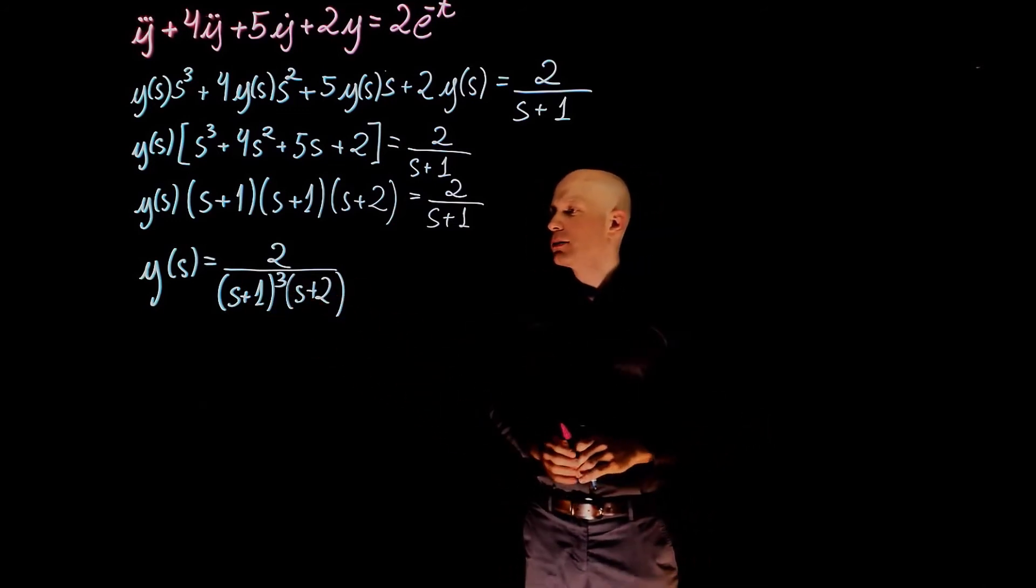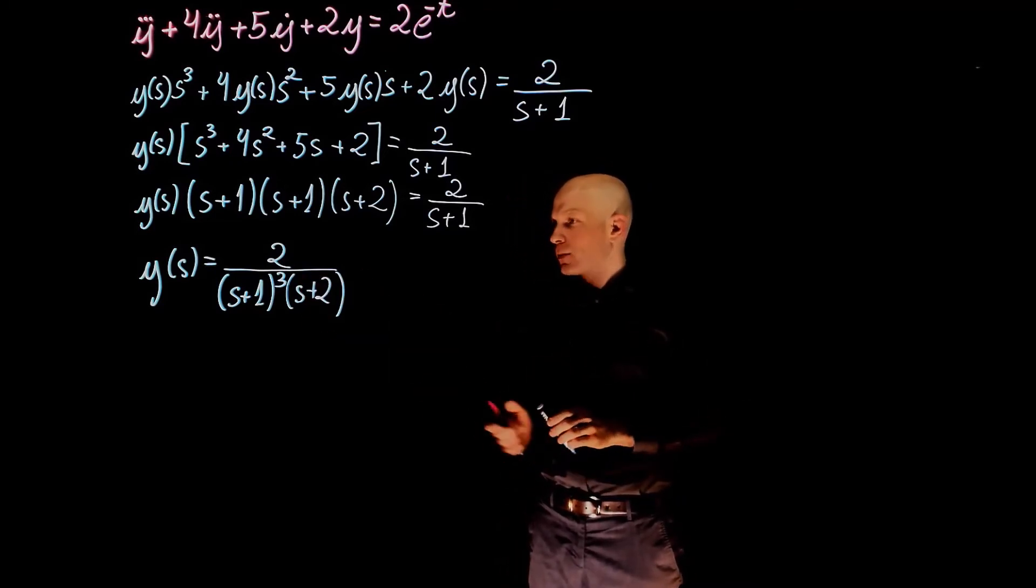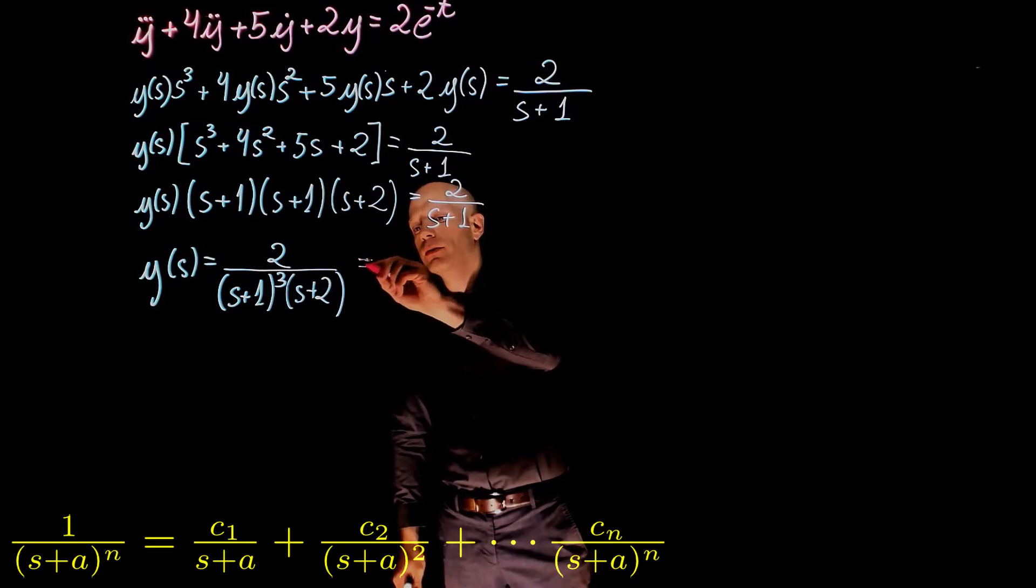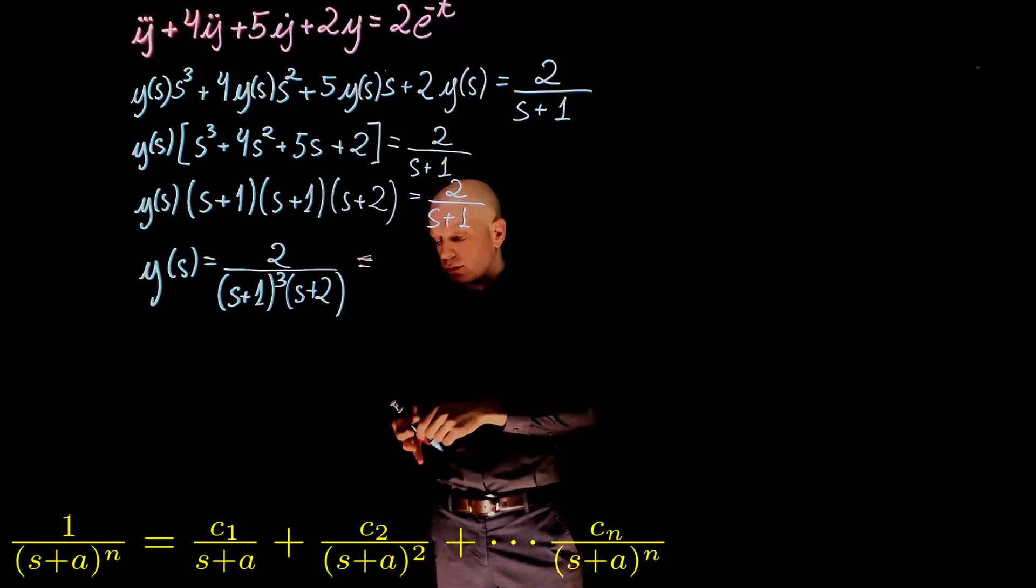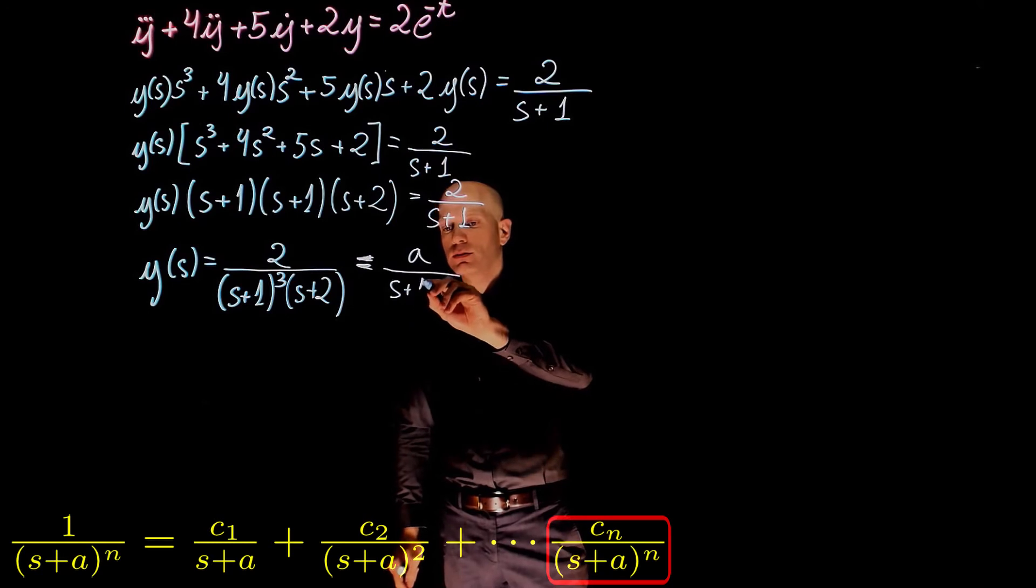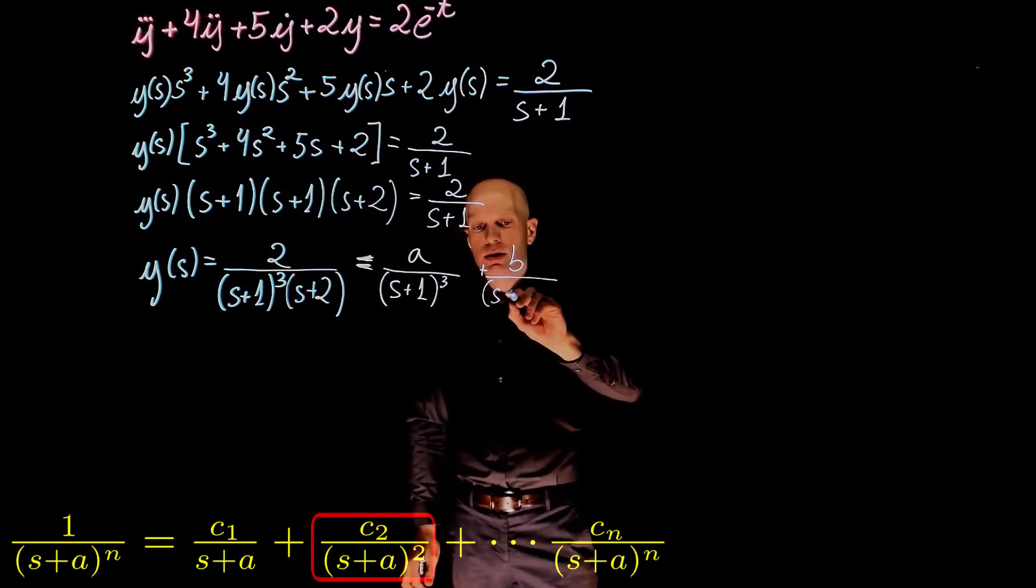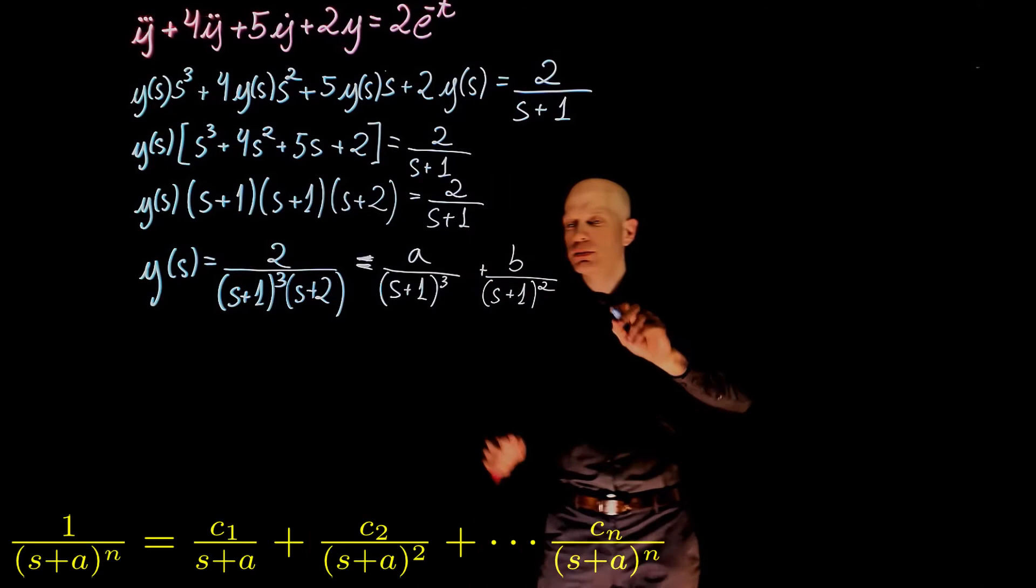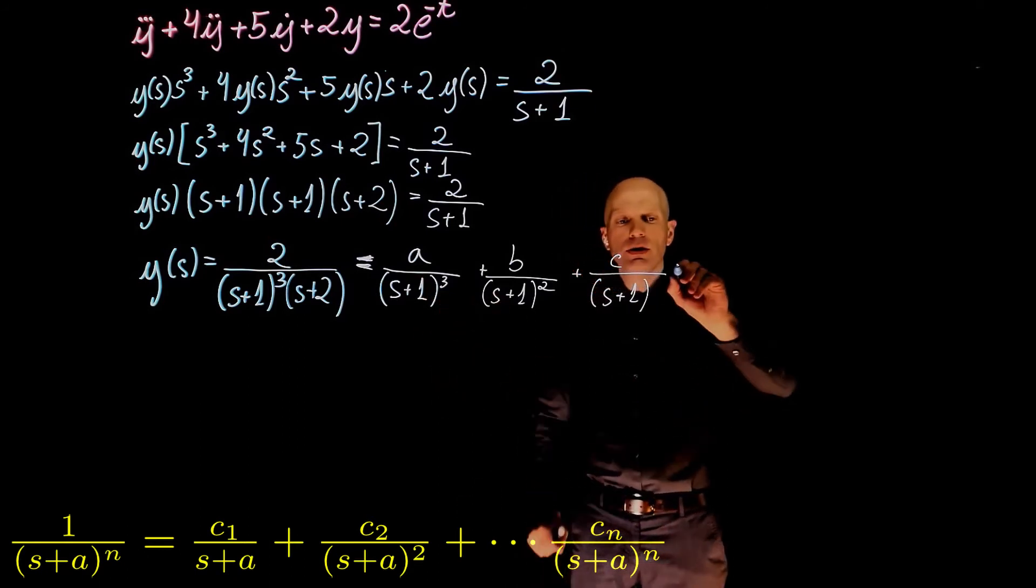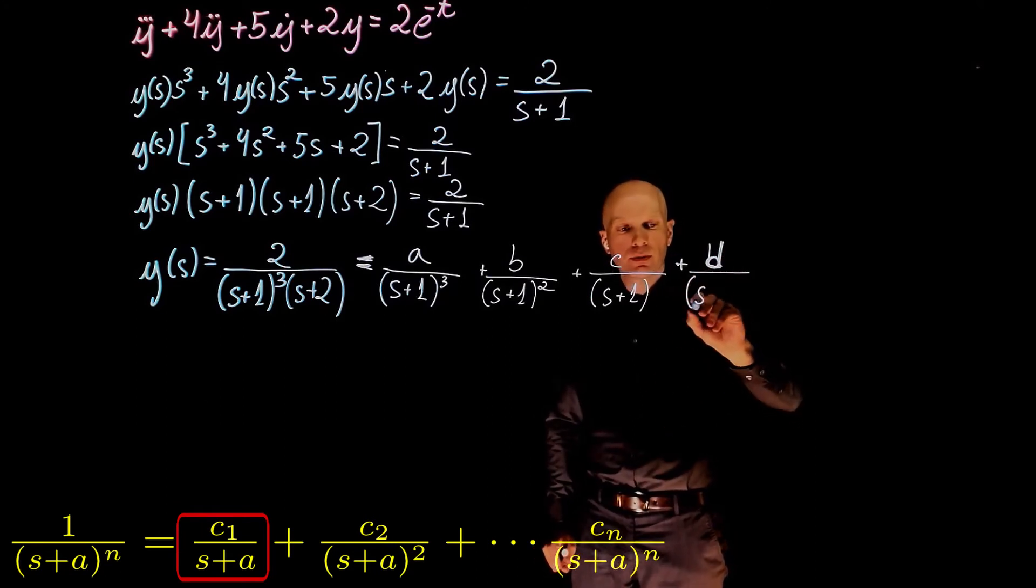Our job now is to find the inverse Laplace of y(s). This will require partial fraction decomposition. We have a third-order polynomial here. We can now decompose this into a form that we have 4 partial fractions. Those are a over s plus 1 to the power of 3 plus b over s plus 1 squared plus c divided by s plus 1 and plus d divided by s plus 2.